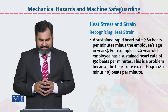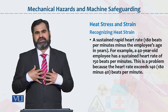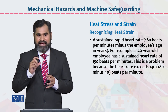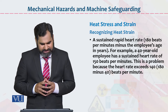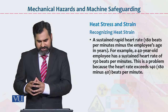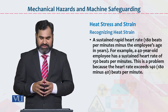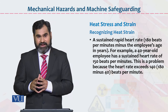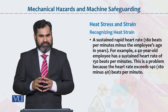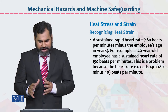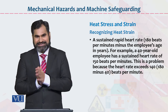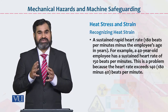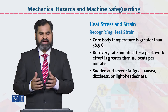Formula: 180 beats per minute minus the employee's age in years. For example, my age is 40 years — 180 minus 40 equals 140. So 140 is the acceptable heart beat threshold. For example, a 40-year-old employee has a sustained heart rate of 150 beats per minute — yehaan pe us ki beat 150 hai, this is a problem, because the heart rate exceeds 140 (which is 180 minus 40 beats per minute). Jab actual heart beat 150 ho gi, is ka matlab hai ki heat strain ka yeh bandha baais ban raha hai.